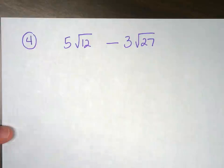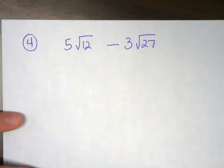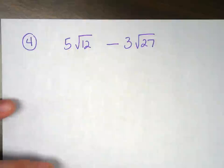All right, we had a clerical error for number four on the study guide, so we decided to change the problem up a little bit. So we have 5√12 minus 3√27.